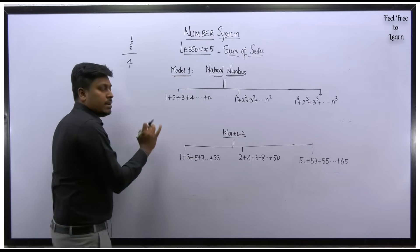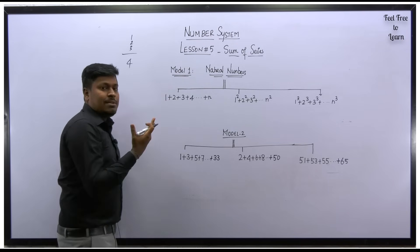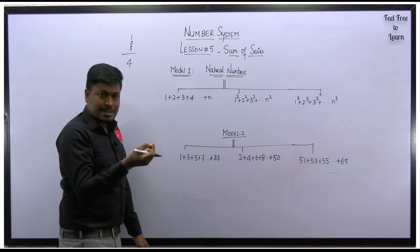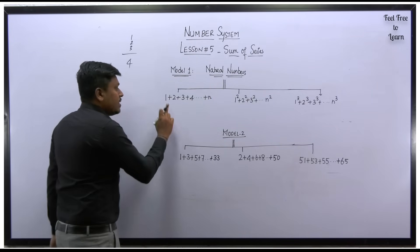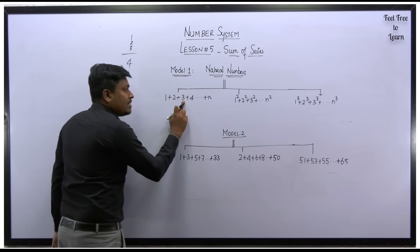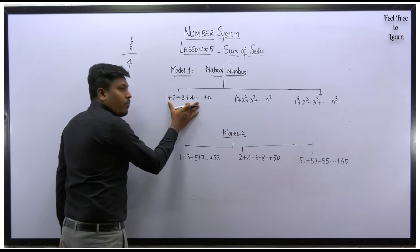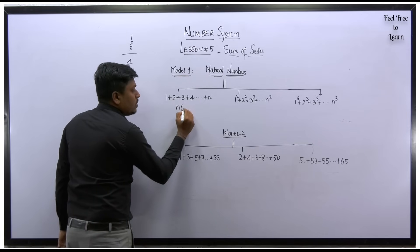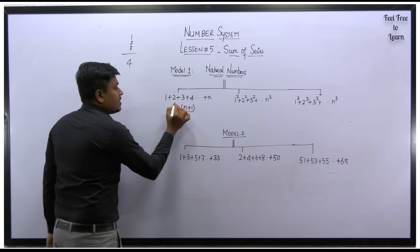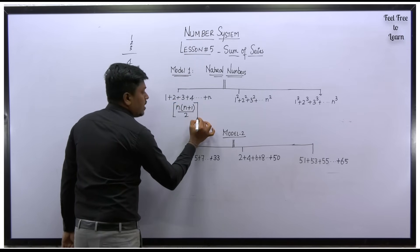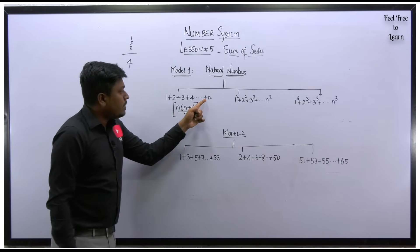Let me take model number 1 — natural numbers. What are natural numbers? Numbers that start from 1 are called natural numbers: 1, 2, 3, 4, 5. So if they give a series 1 plus 2 plus 3 plus 4 till n, the formula will be n into n plus 1 divided by 2. The value of n will be the last number.